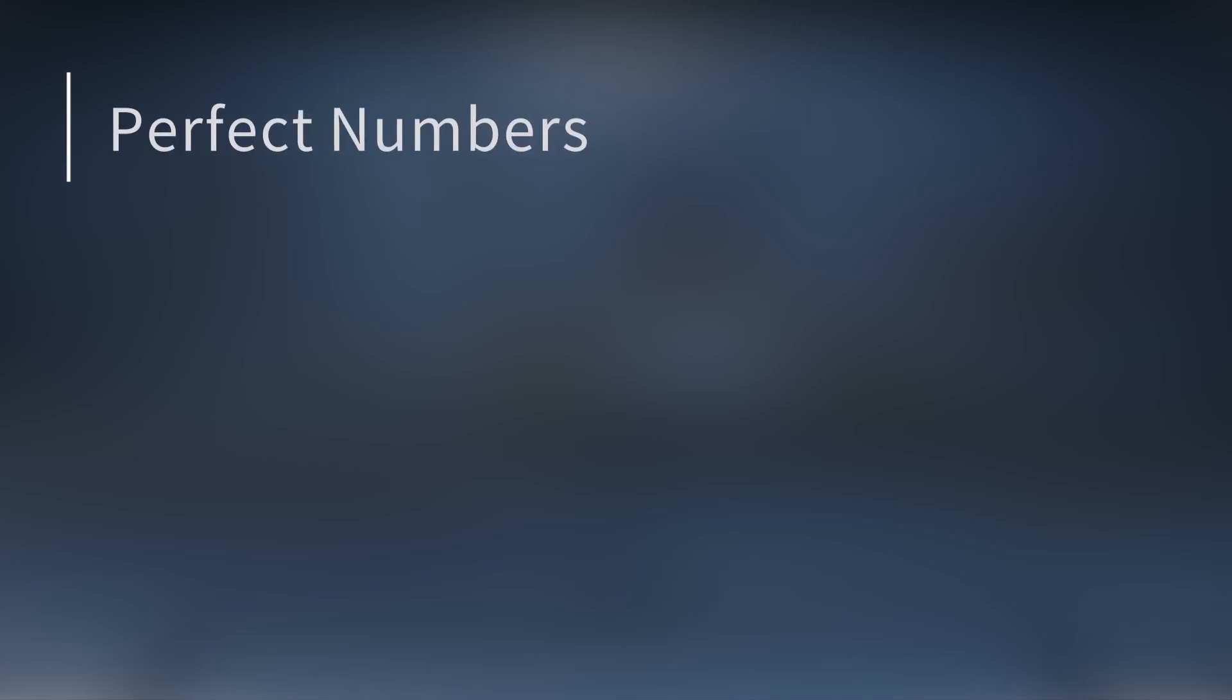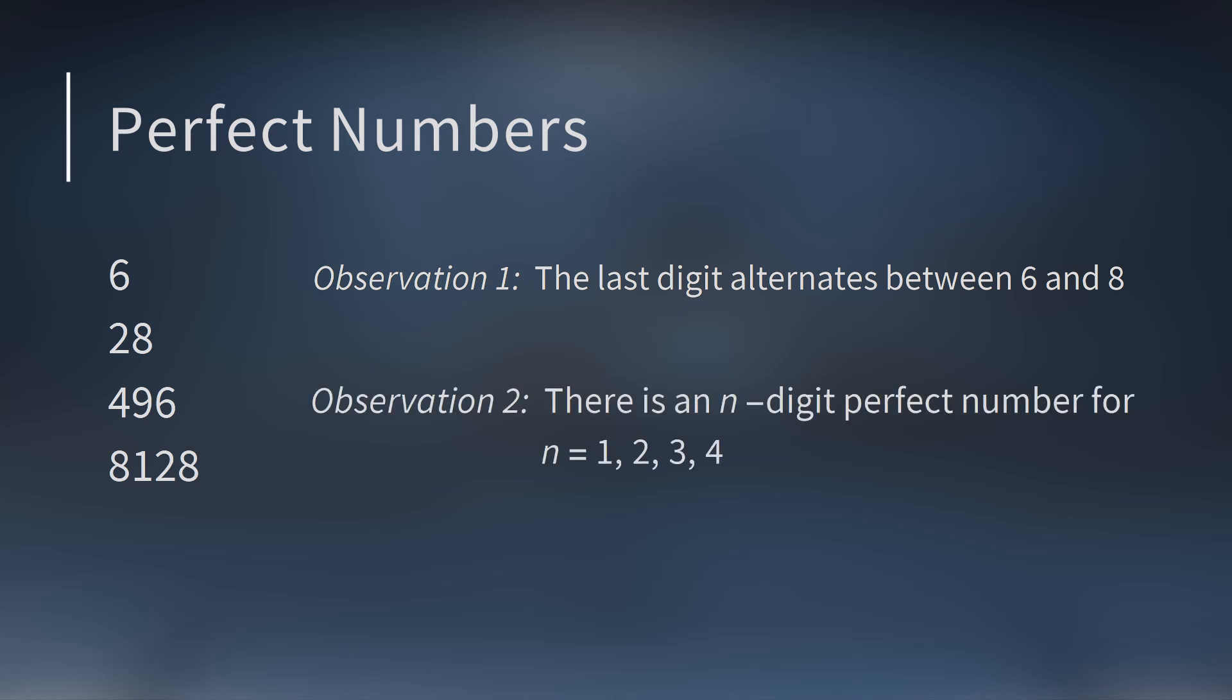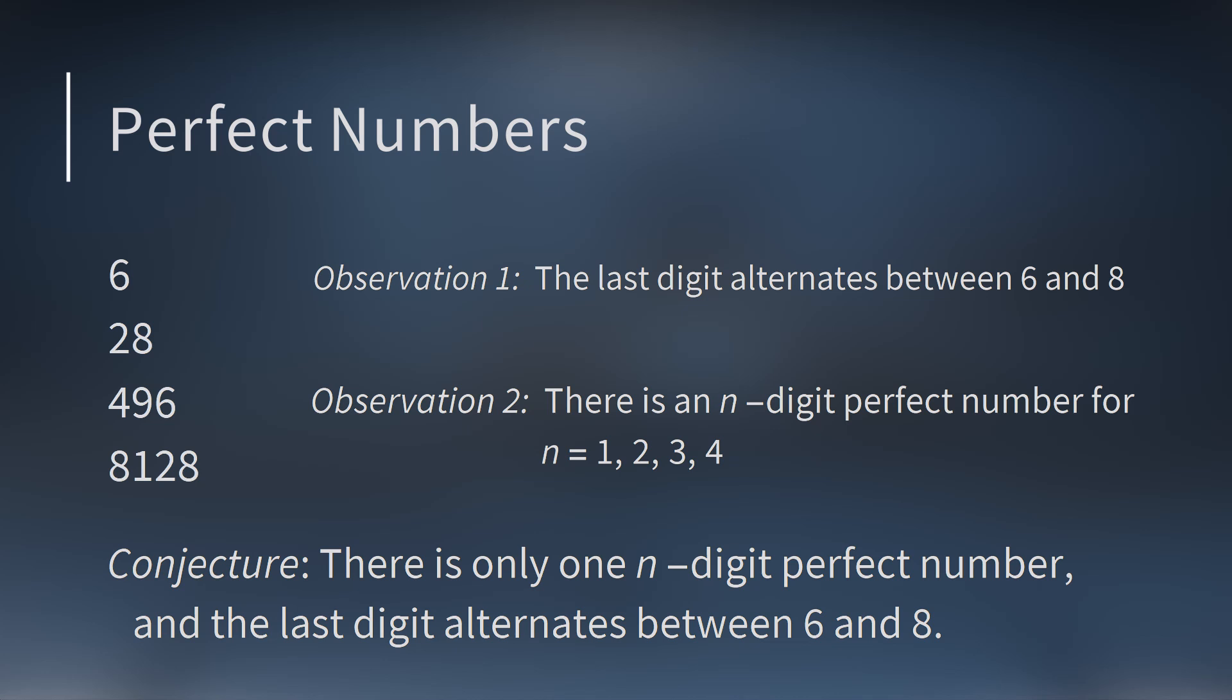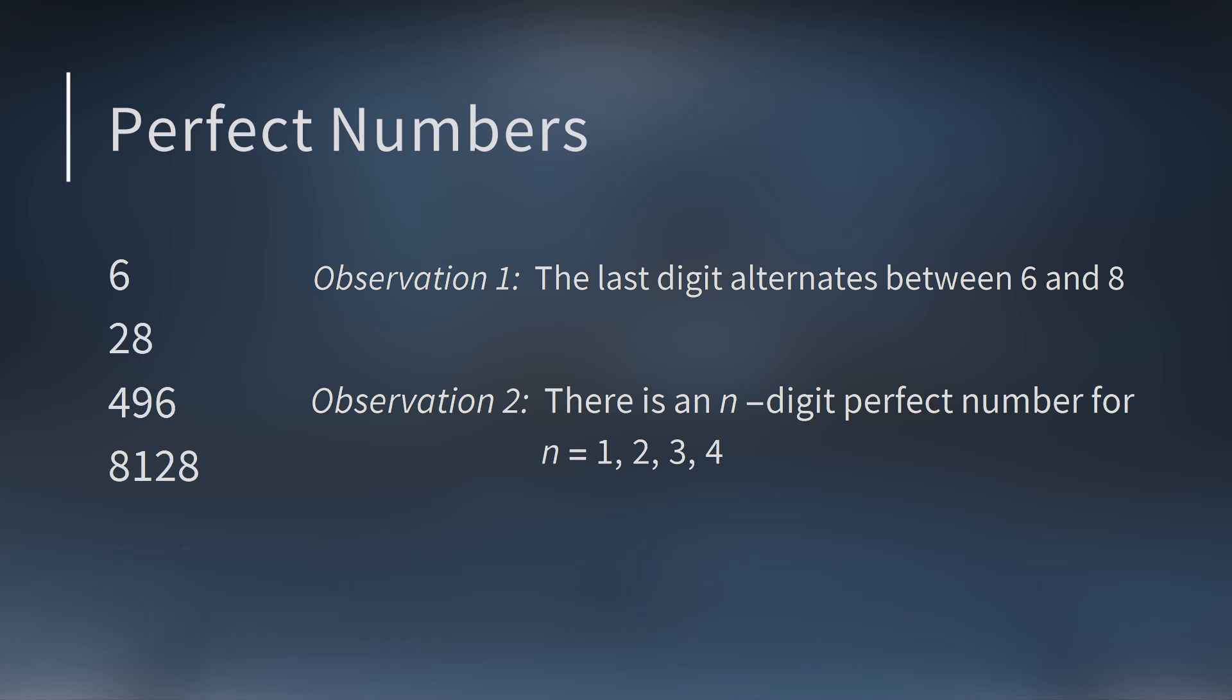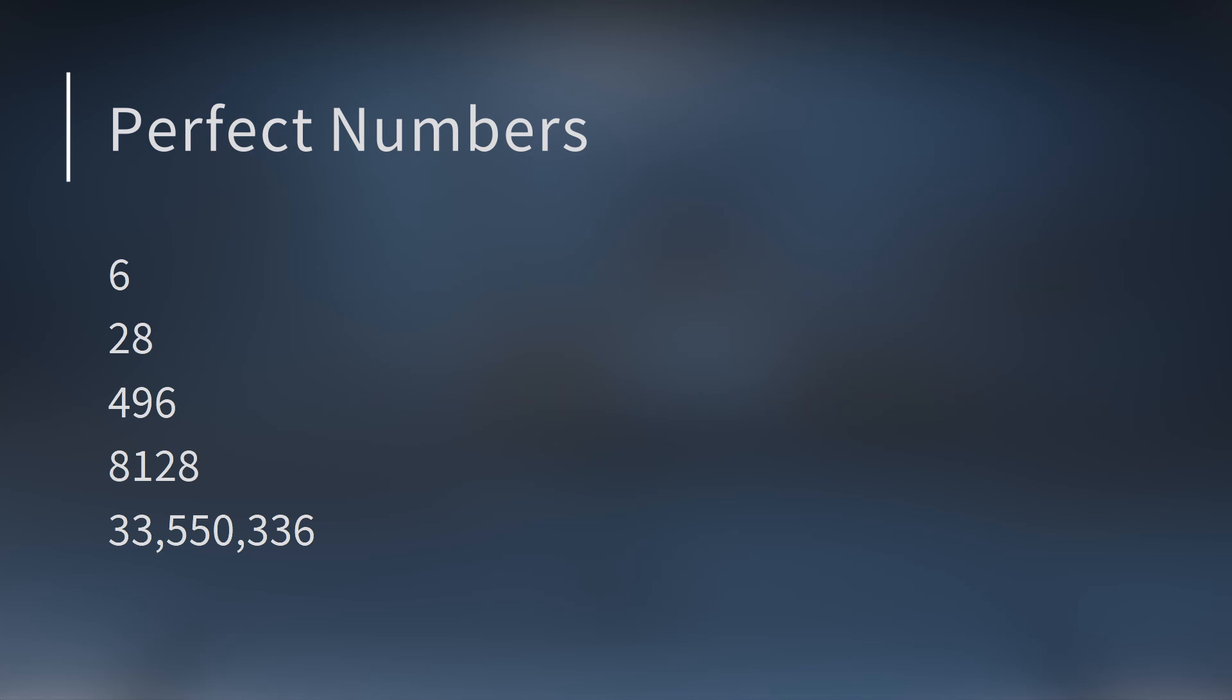That leaves the perfect numbers. We know 6 is perfect and 28 is perfect. And the next two perfect numbers are 496 and 8,128. Those were the only perfect numbers known thousands of years ago. They did notice the last digits of these perfect numbers alternated between 6, 8, 6, 8. Also of these four, the first one has one digit, the next one has two digits, the third has three digits, and the fourth has four digits. So they thought that was the pattern. That for any number of digits, there was one and only one perfect number. And the last digit alternates between 6 and 8. Unfortunately, it turns out this pattern breaks down pretty quickly, because the fifth perfect number is 33,550,336. It does end in 6, but it does not have five digits.